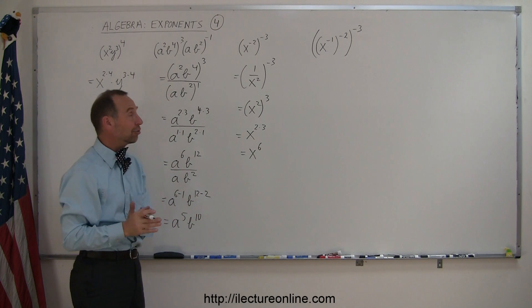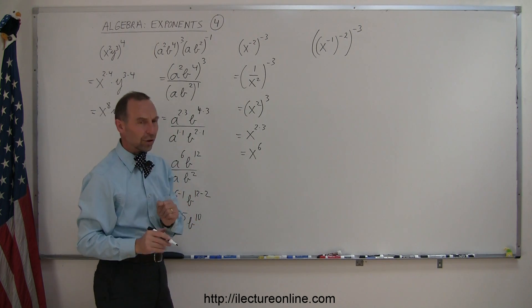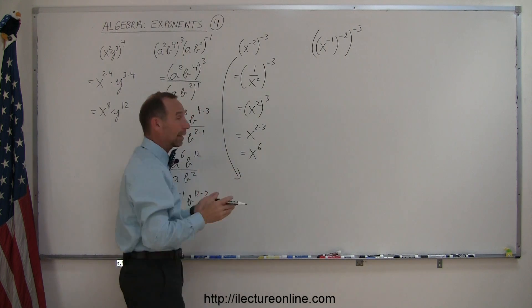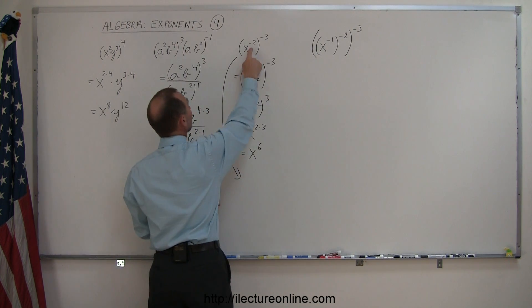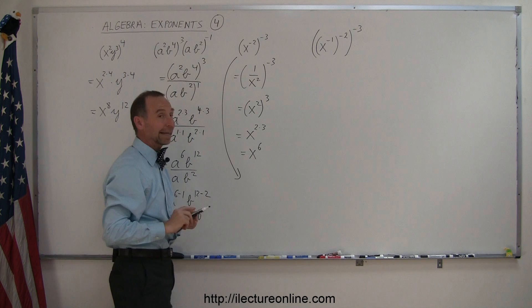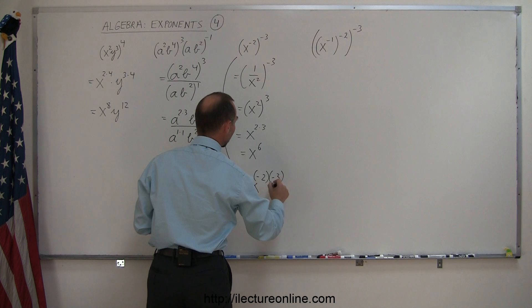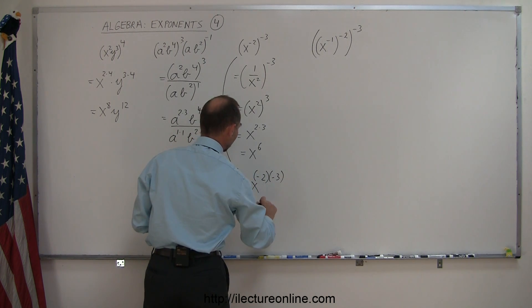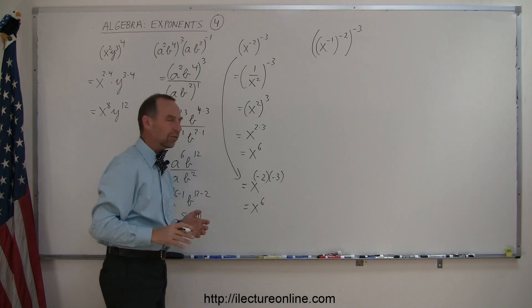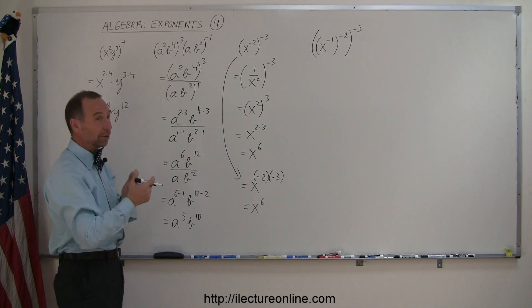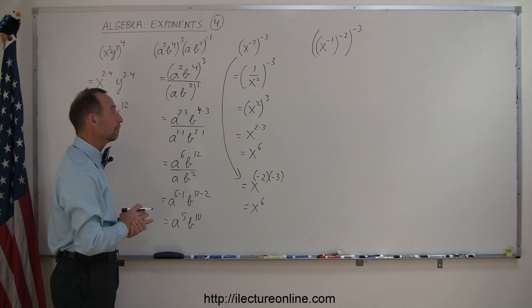Now I didn't have to do that. I just did that for illustration. What I could have done is I could have gone straight to this point and just simply apply the rule. When I have an exponent raised to an exponent, I simply multiply the exponents. And so I could have written this is equal to x to the minus 2 times minus 3 power. And then again you get x to the 6th power, exactly the same. So I just did that for illustration to see how you can get rid of negative signs as well as simply following the rule blindly.